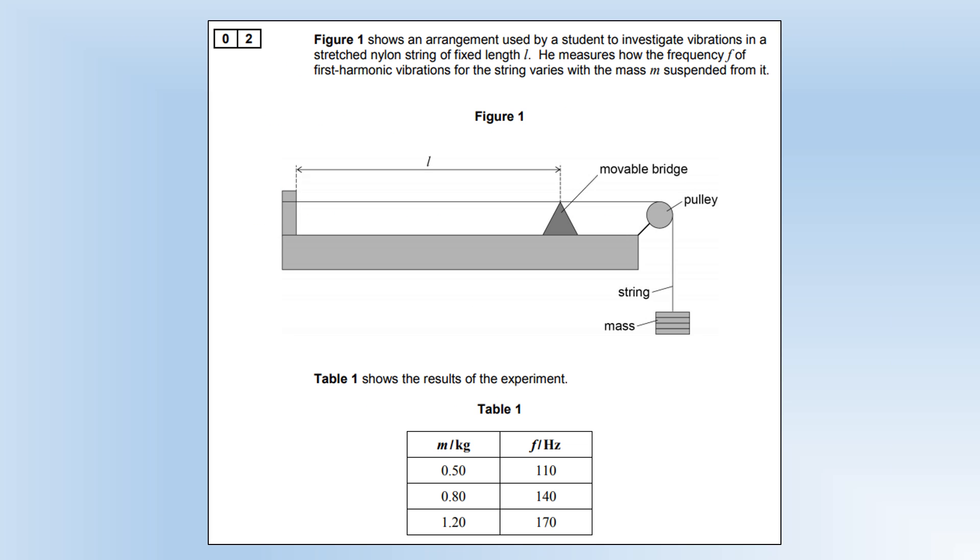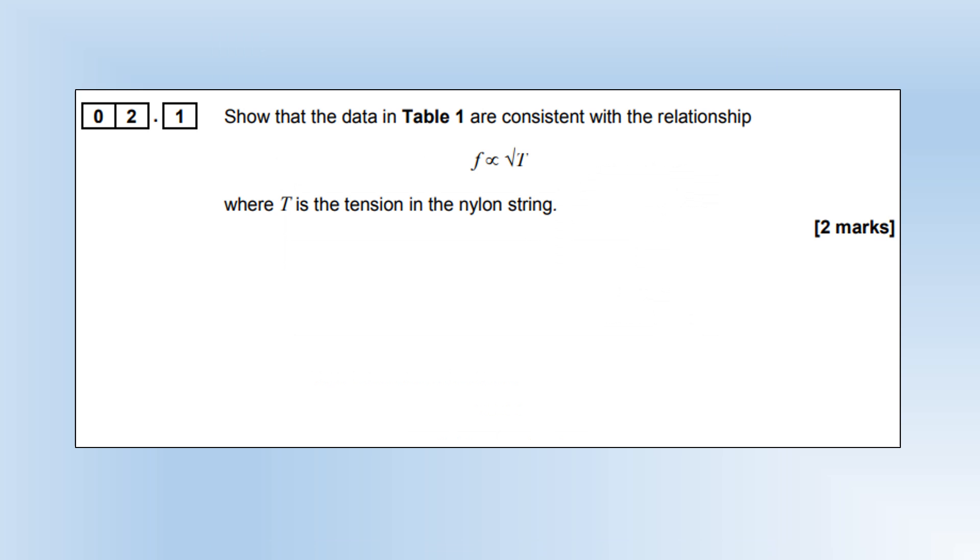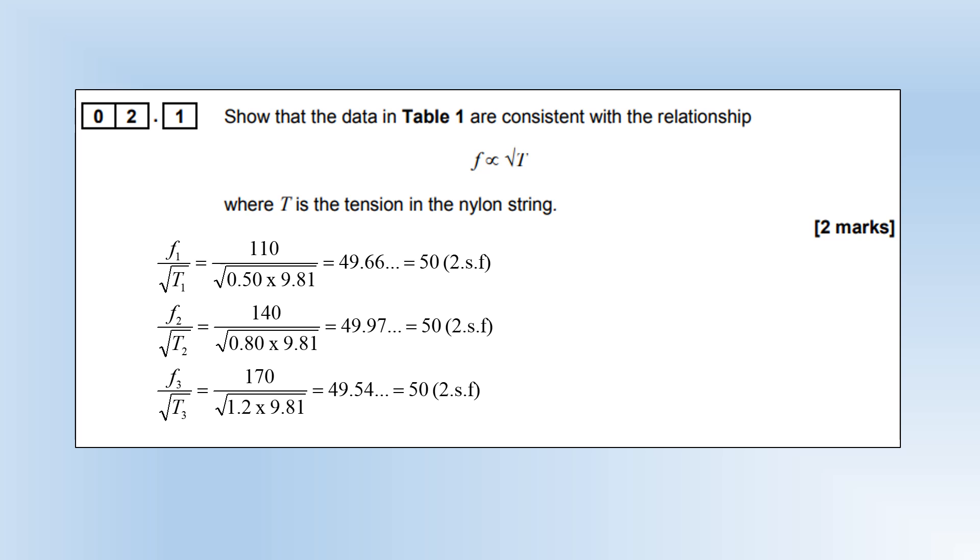Figure 1 shows an arrangement used by a student to investigate vibrations in a stretched nylon string of fixed length L. It measures how the frequency of the first harmonic vibration of the string varies with the mass suspended from it. Show that the data in Table 1 are consistent with the relationship frequency is directly proportional to the square root of tension. I'm going to calculate frequency divided by root tension for each of the different sets of data, and we can see that it comes out as 50 in each case, indicating it is a directly proportional relationship between frequency and root tension.